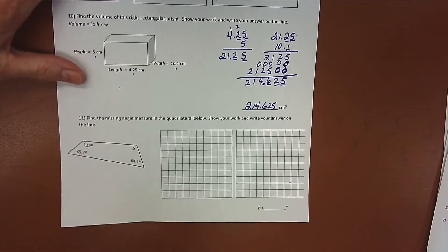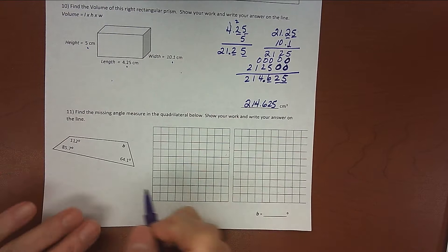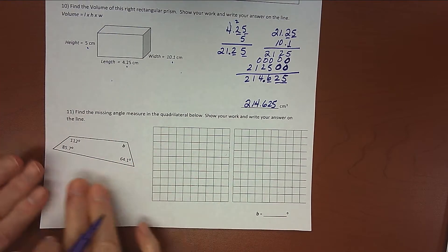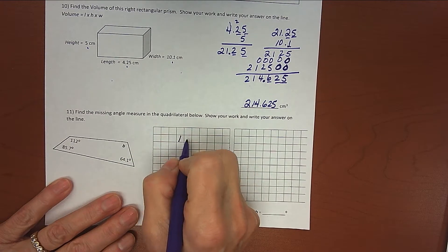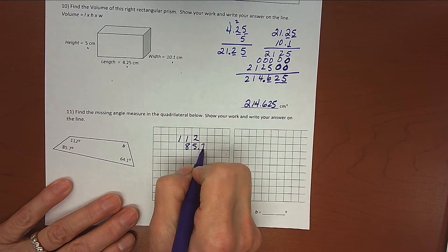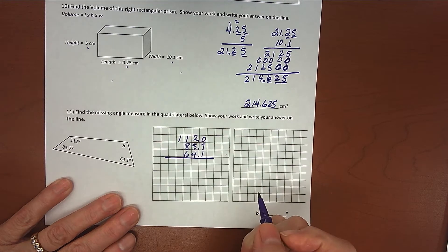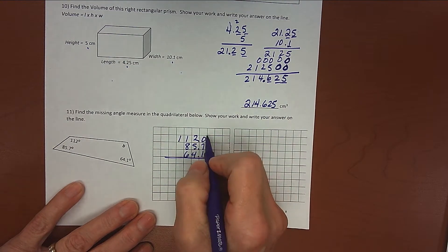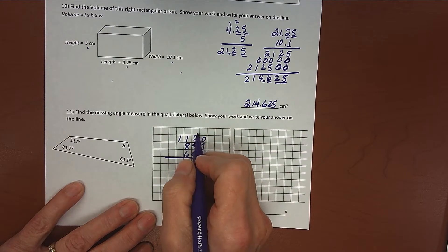Last problem here. We're going to find the missing angle, which means I'm going to add these three together. And because this is a quadrilateral, I'll subtract that from 360. So I'm going to do 112 plus 85 and 7 tenths plus 64 and 1 tenth. I'll add a decimal point and a 0 here to make my work easier. When I add these up, I am going to get 8. 9, 10, 11.